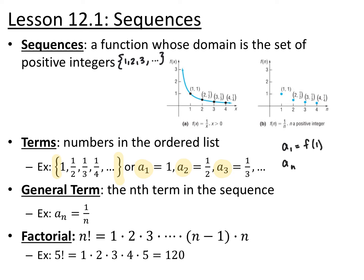a sub n would be equivalent to saying f of n or f of x. So we use this subscript notation to represent sequences. The general term or the nth term, also sometimes called the explicit formula, is basically the function equation for the sequence. So if we're representing this sequence here, then a of n equals 1 over n — that is the general term.